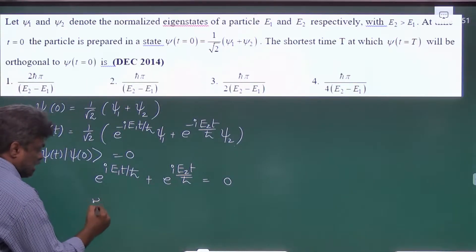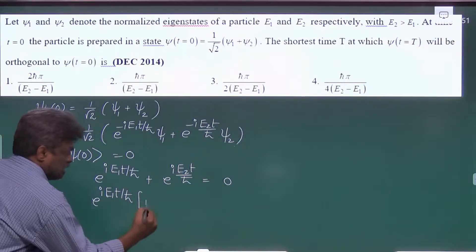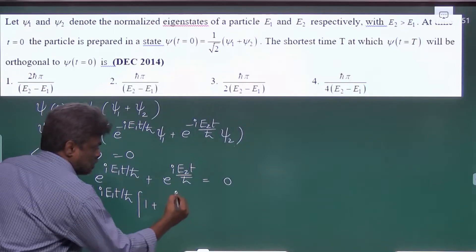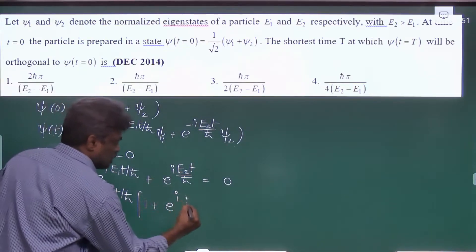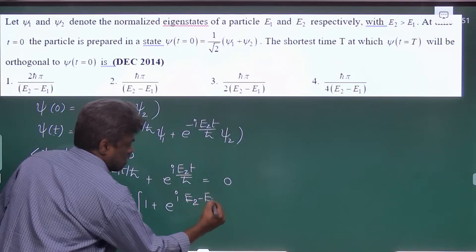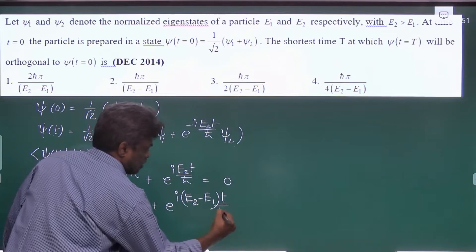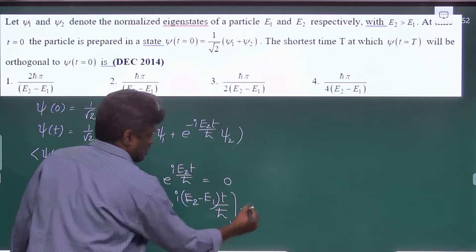So if I take common e raise to i E1 t by h cross, then I will get 1 plus e raise to i—sorry, E2 minus E1 into t by h cross. This is equal to 0.